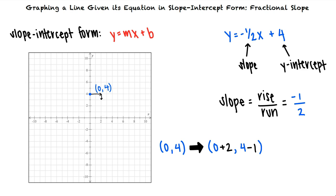This tells us that another point on the line is (2, 3). We can now connect the points (0, 4) and (2, 3) to graph the line.